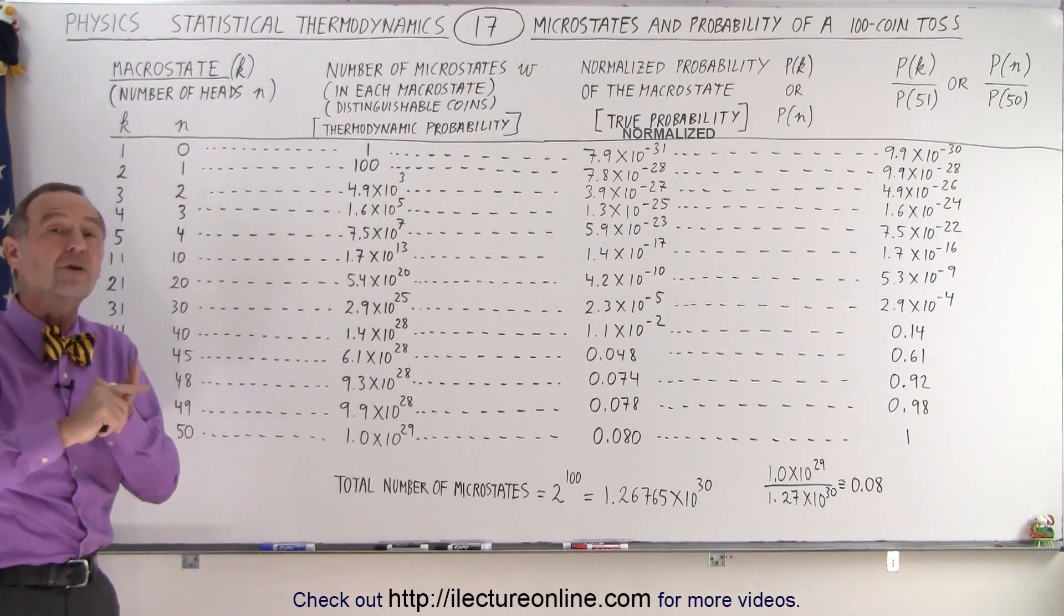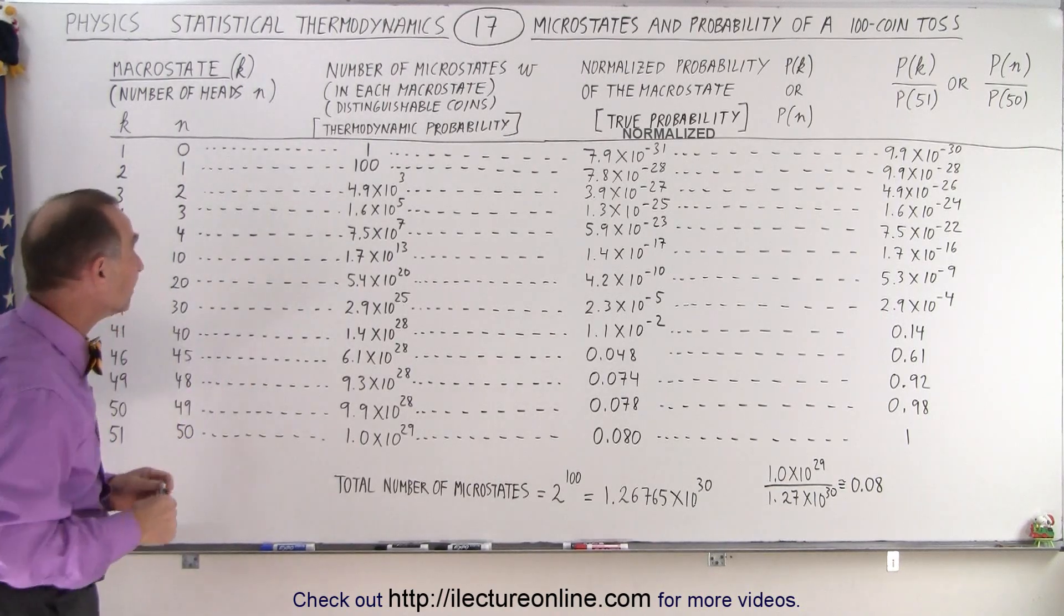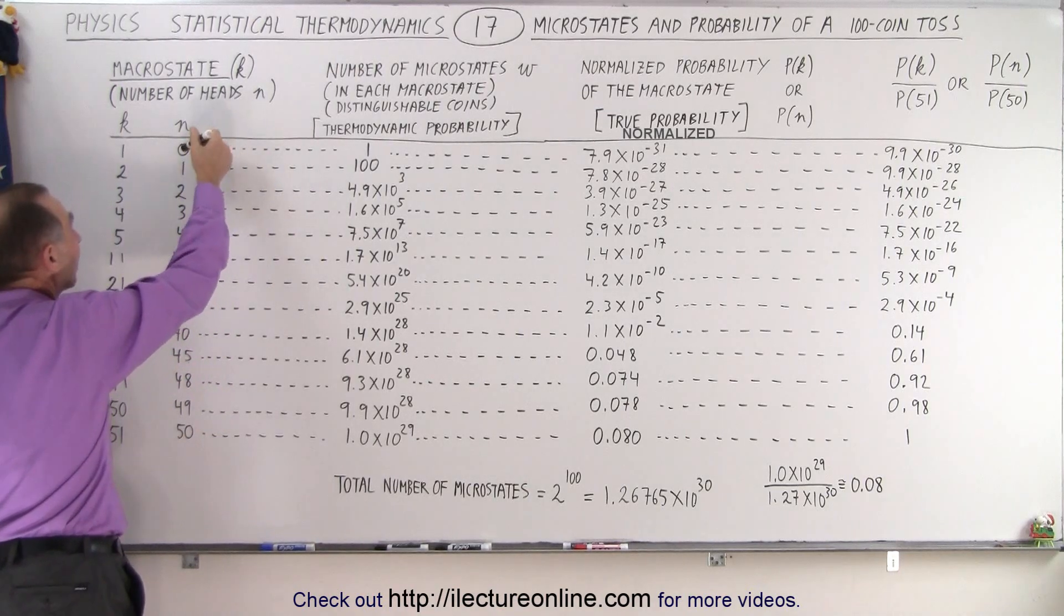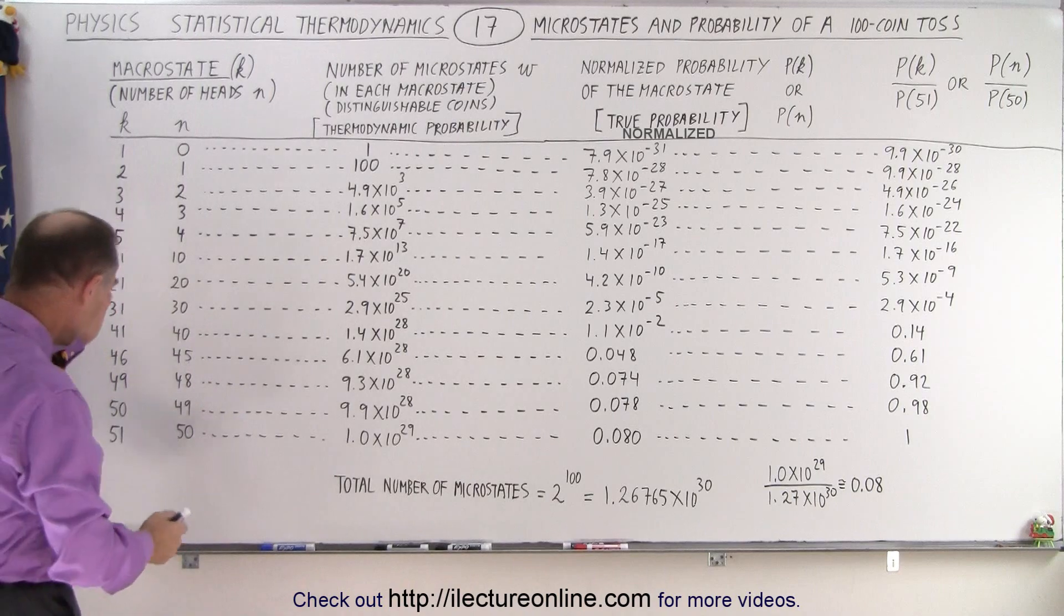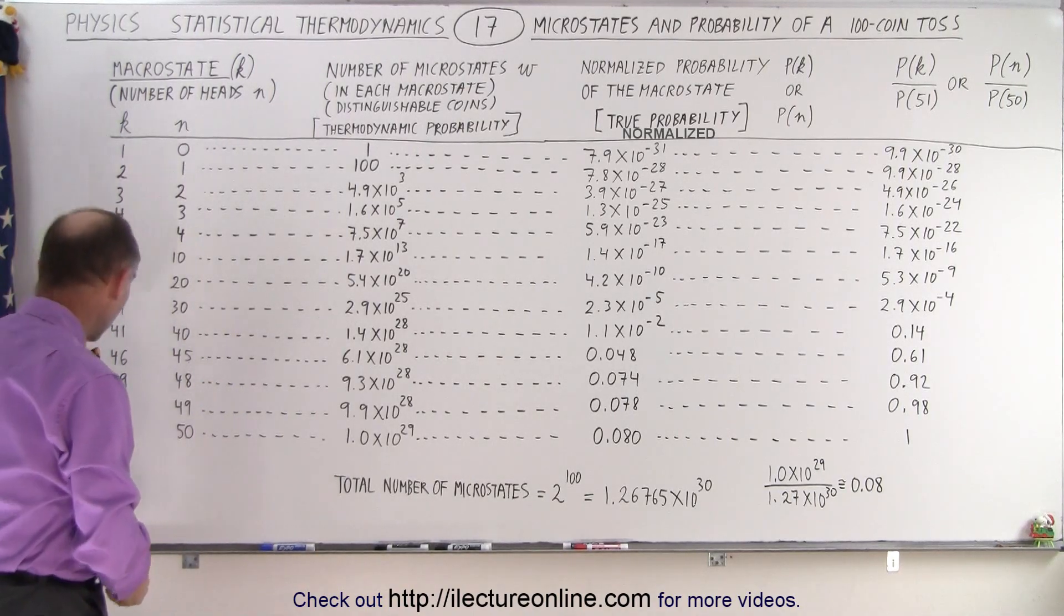In other words, you can have zero coins with heads and 100 coins with heads and everything in between. We can also think of it as number heads. And then, of course, the number goes from 0 to 50. That's where it would stop.